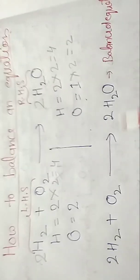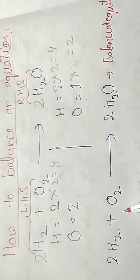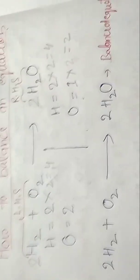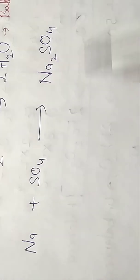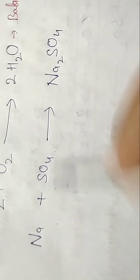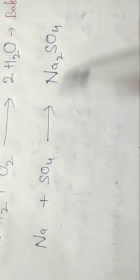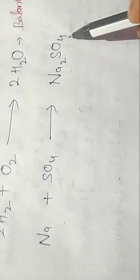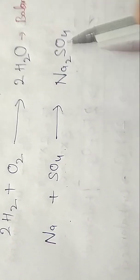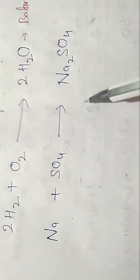Now you can see this is a balanced equation: 2H2 plus O2 produces 2H2O. Here is the next example given: Na plus SO4. These are reactants and Na2SO4 is the product. So first, this is unbalanced.